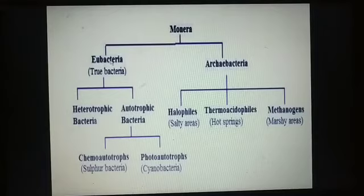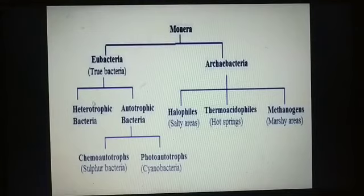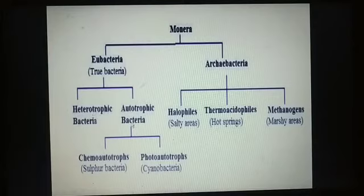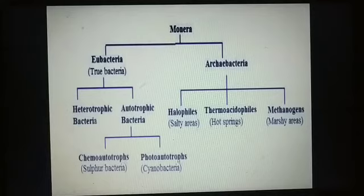The next category is Eubacteria, also called true bacteria. They are of two types: heterotrophic bacteria, which cannot prepare their own food and are dependent on others — either as parasites or in a symbiotic relationship — and autotrophic bacteria, which can prepare their own food. Autotrophic bacteria are further divided into two groups: chemo-autotrophs and photo-autotrophs.